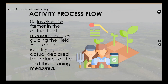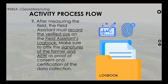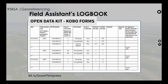Activity number eight: involve the farmer in the actual field measurement by guiding the field assistant in identifying the actual declared boundaries of the field being measured. Activity number nine: after measuring the field, the field assistant must record the verified size in the field assistant's logbook, and make sure to affix the signatures of the farmer and AEW as proof of consent and certification of data collection.